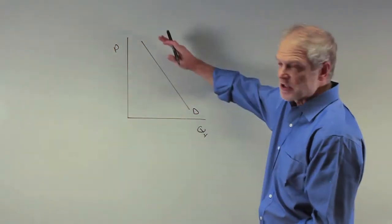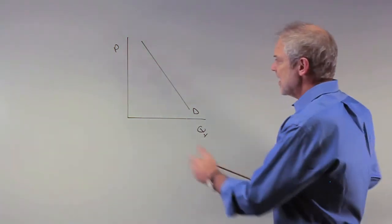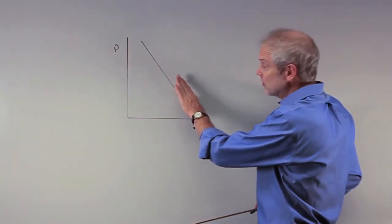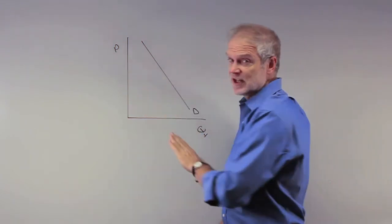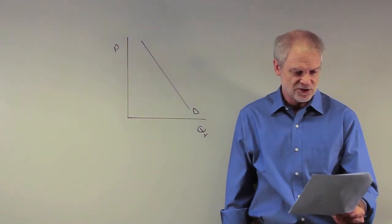A change in income, if it's a normal good, will cause the demand curve to shift out when income increases. If income decreases for a normal good, the demand curve shifts in. So a change in income definitely shifts the demand curve. That's not the correct answer.